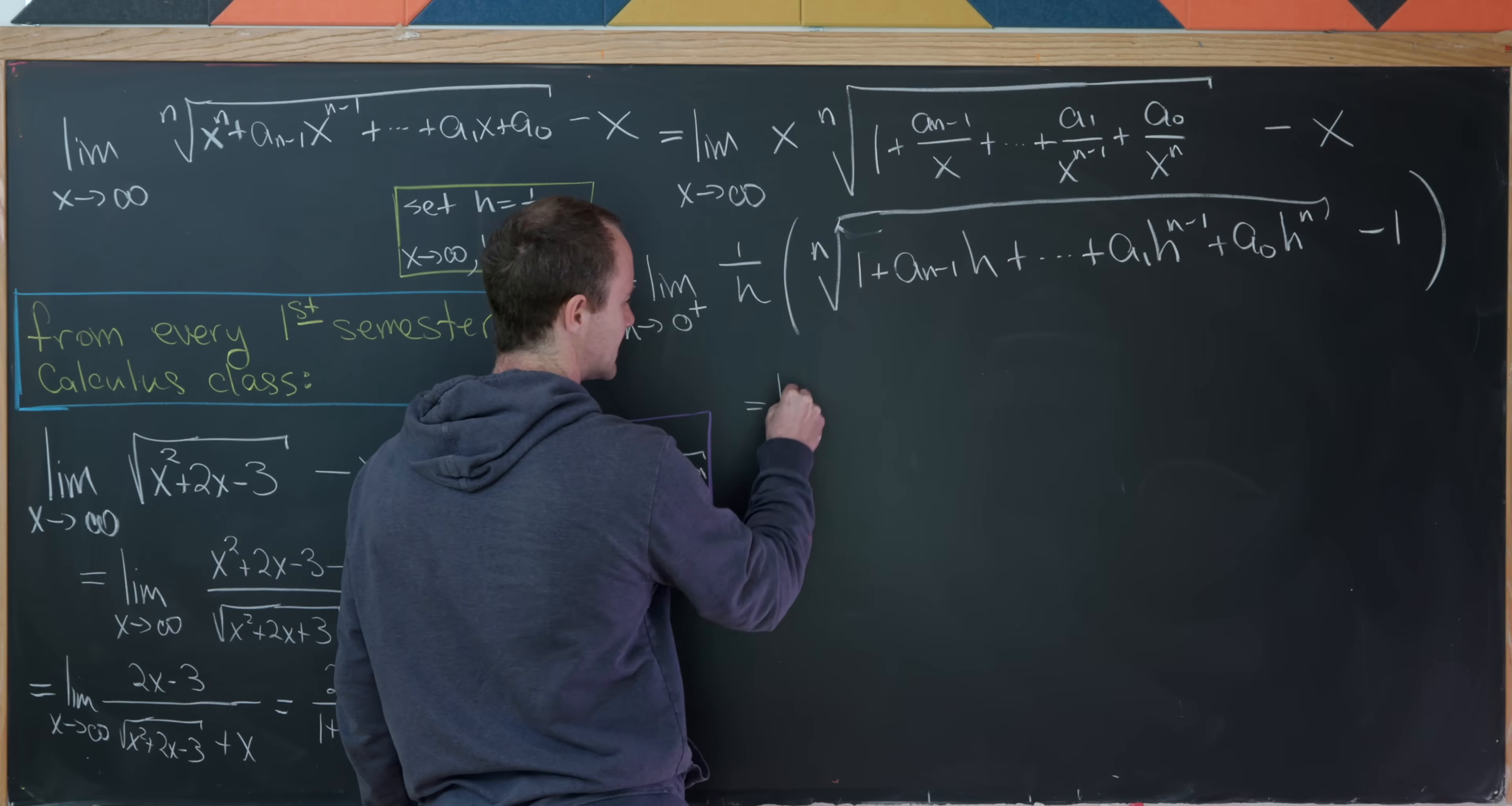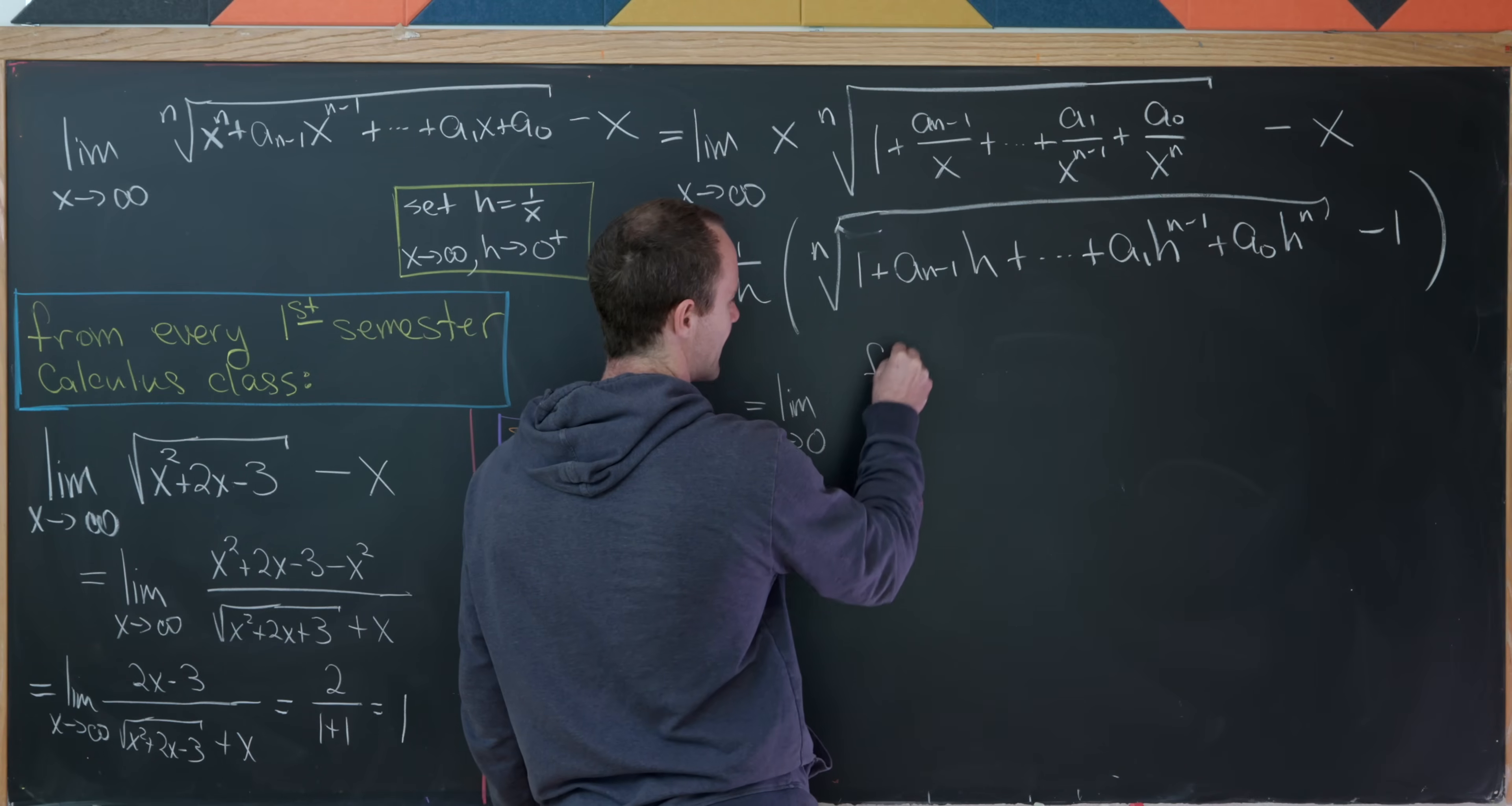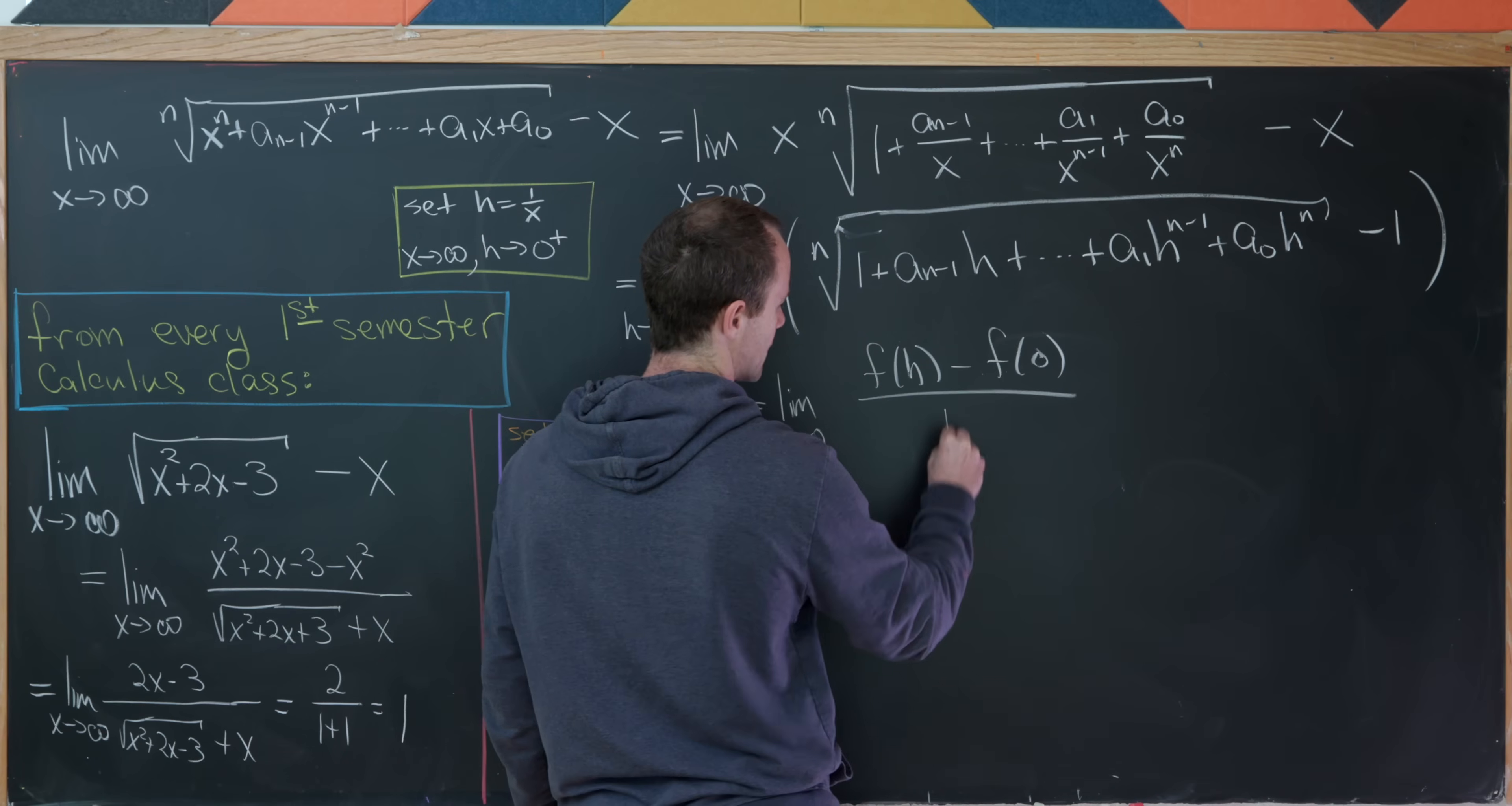That turns this limit into the following. We have the limit as h goes to 0, and then I have f of h minus f of 0, where I've replaced that 1 with f of 0, over h.